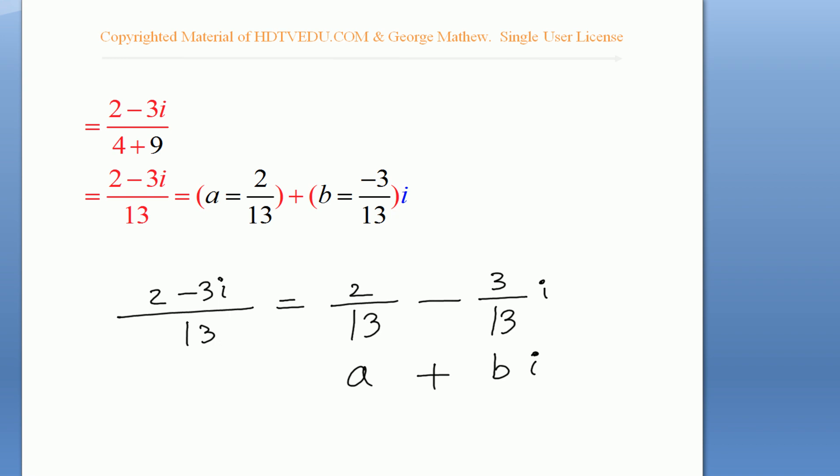So, now we have a equal to 2 over 13. What is b? b is negative 3 over 13.